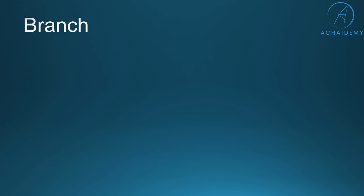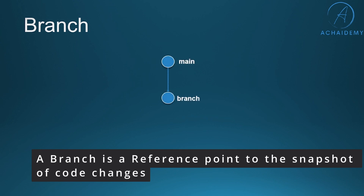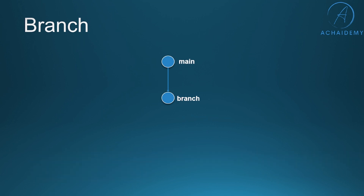The first terminology we will understand is a branch. By default, when we create a repository, you will notice a branch called main. Whenever we want to implement a new feature or fix a bug, we create what is known as a branch. A branch is basically a reference to the latest version of the code, copied into a new reference point known as a branch. A branch could be created on the server, which is the second...